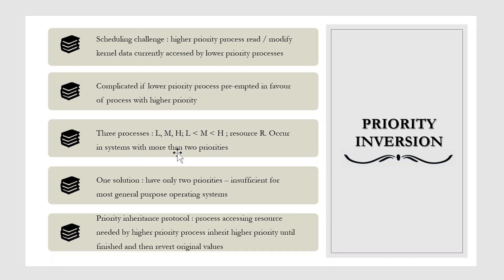Priority inversion occurs only in systems with more than two priorities. So one solution is to have only two priorities, but that is insufficient for most general purpose operating systems. Typically, these systems solve the problem using a priority inheritance protocol. According to this protocol, all processes that are accessing resources needed by a higher priority process inherit the higher priority until they are finished with the resource in question. When they are finished, their priorities revert to their original values.